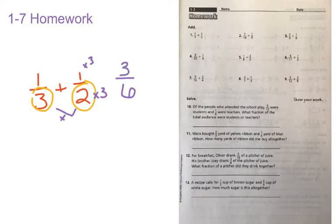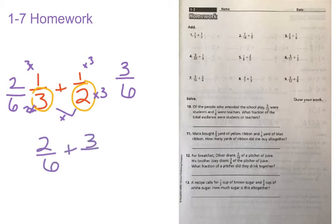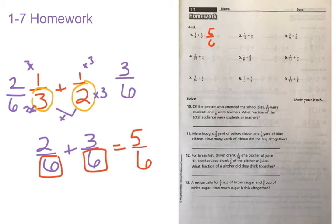And then on this one, I'm going to multiply it by 2, and 3 times 2 is equal to 6, and I'm going to multiply the top by 2, and 2 times 1 is equal to 2. Now I have 2 sixths plus 3 sixths, and because I've created a common denominator here, I can go ahead and add straight across the top. My denominator remains the same. 2 plus 3 is equal to 5, and my answer here is 5 sixths.